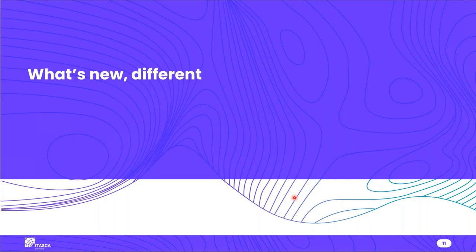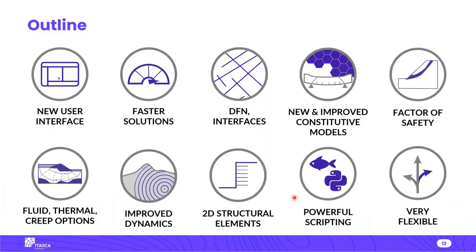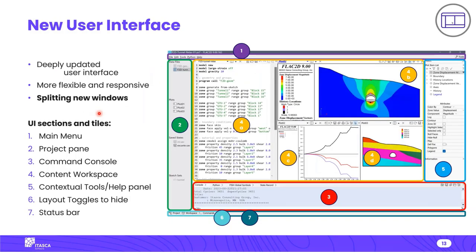Now we'll talk about more specific features of FLAC 2D — what's new and different. We won't go into significant detail on each topic but will cover all major features. We'll start with the new user interface. With version 9 of Itasca software we had a relatively significant overhaul of the user interface, and it now has a well-organized structure.